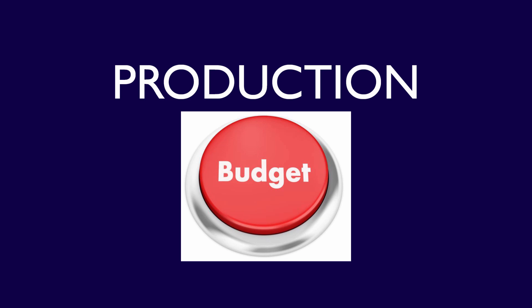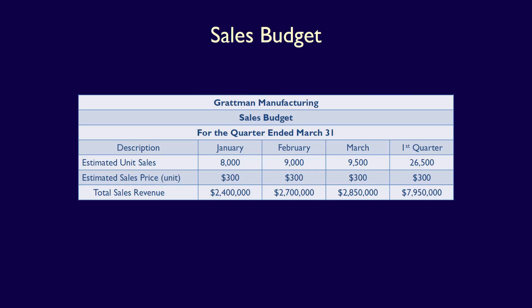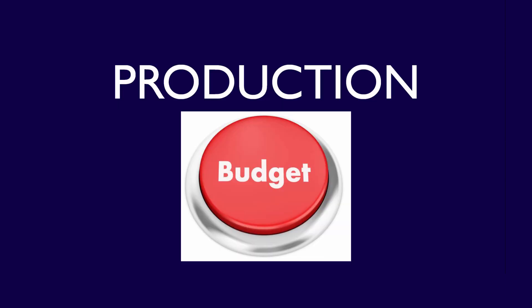In this video, we'll be preparing the production budget. In our previous video, we completed a sales budget, the first budget completed in the master budget process. The sales budget estimates the number of units the company is expected to sell and the sales revenue they will earn. In our example for Grattman Manufacturing, we used sales estimates to produce the sales budget for the first three months and the quarter. Once management has estimated how many units they expect to sell, they can determine the number of units they need to produce by producing the production budget.